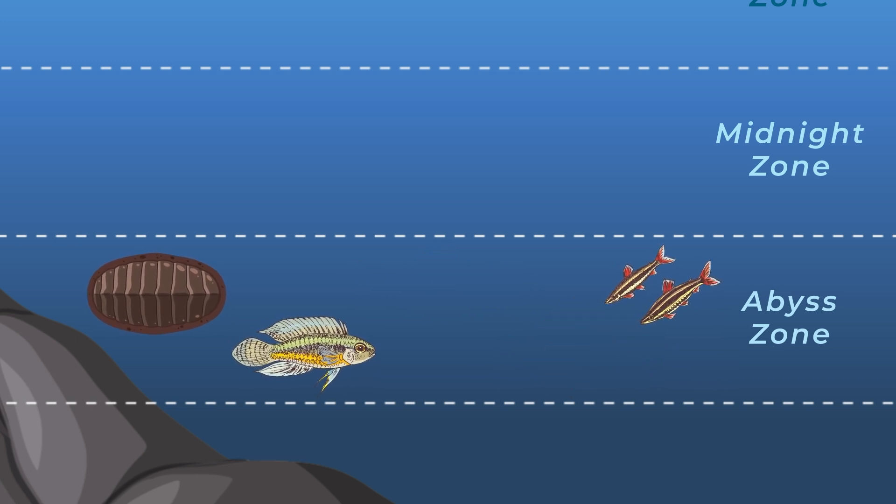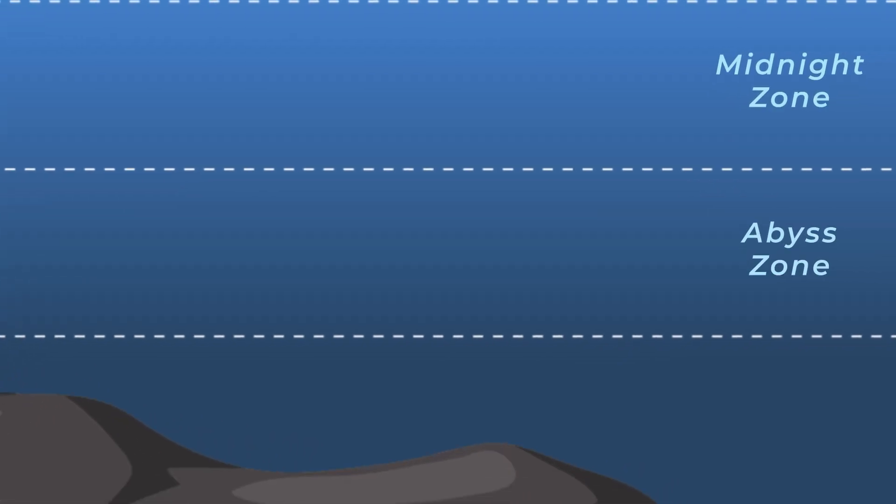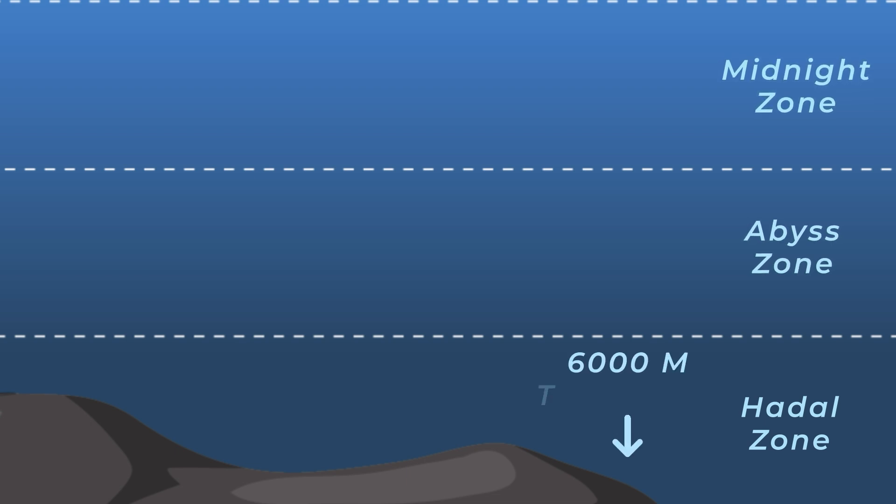But there's one more zone that's even deeper than the abyss. It's called the hadal zone. This is the deepest part of the ocean and it goes down to an incredible 11,000 meters. That's deeper than Mount Everest is tall!